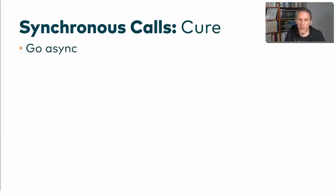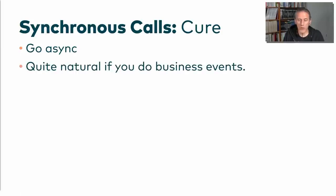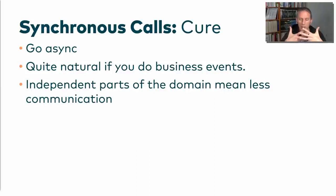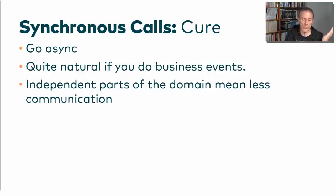The cure for cascading synchronous calls: try asynchronous communication, which is quite natural if your system is built around business events. However, to me, that's the wrong level of cure. What I would try to understand first is whether the microservices are maybe too dependent on one another — whether the domain logic is so intertwined that all those microservices are really one thing. Maybe we should have a different split. If we fix that, the problem vanishes because we don't have so many calls and can introduce synchronous communication without so much dependency.